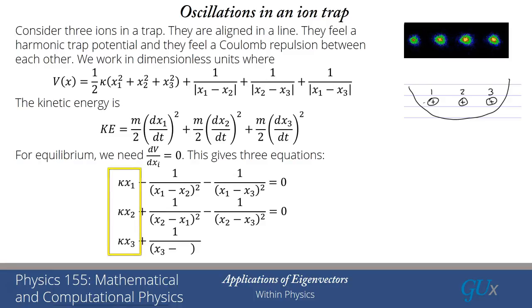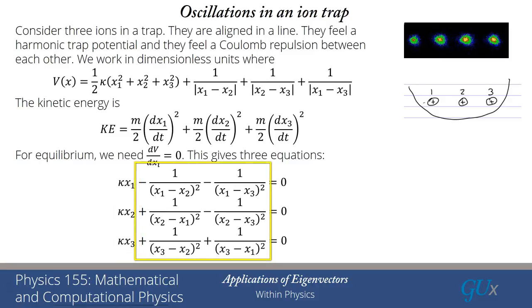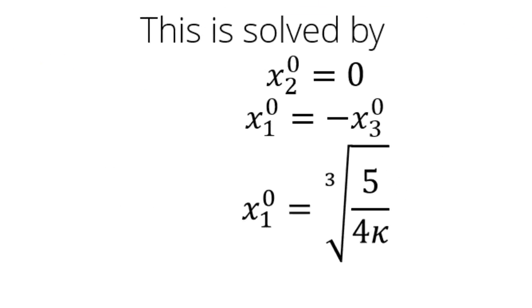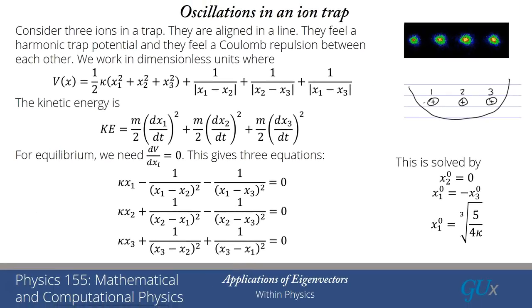I take a derivative with respect to x₁, with respect to x₂, and with respect to x₃. They all look pretty similar: there's a κ·xᵢ term from the harmonic potential, and a 1/(xᵢ − xⱼ)² term from the Coulomb repulsion, but the signs differ. If you stare at these equations, you find that the equilibrium position x₂ = 0 solves the problem with x₁ = −x₃, and then x₁ equals the cube root of 5/(4κ). That's the solution for the equilibrium positions.